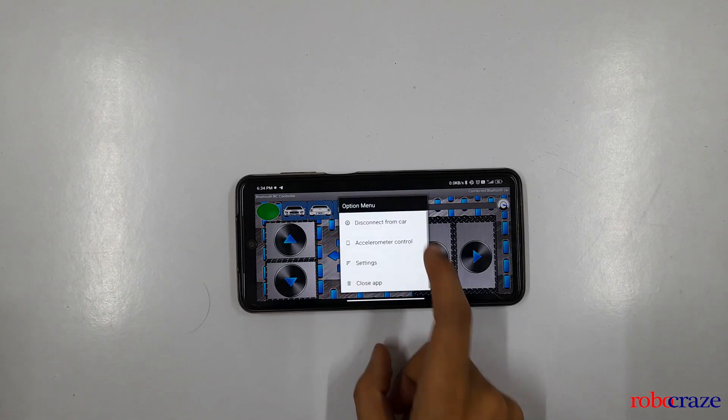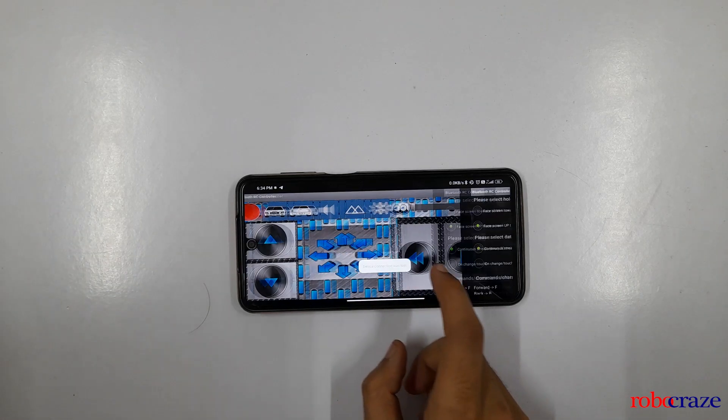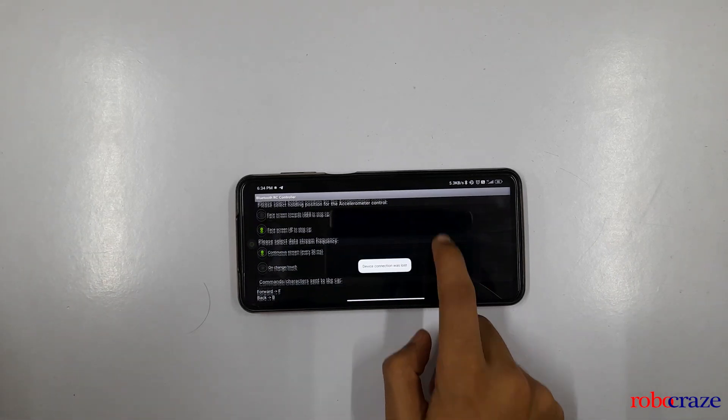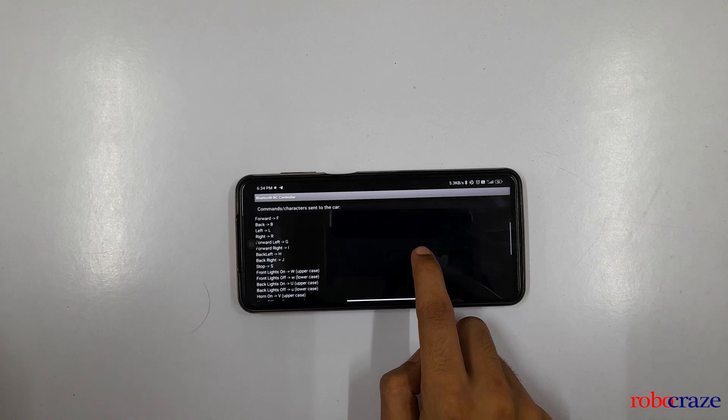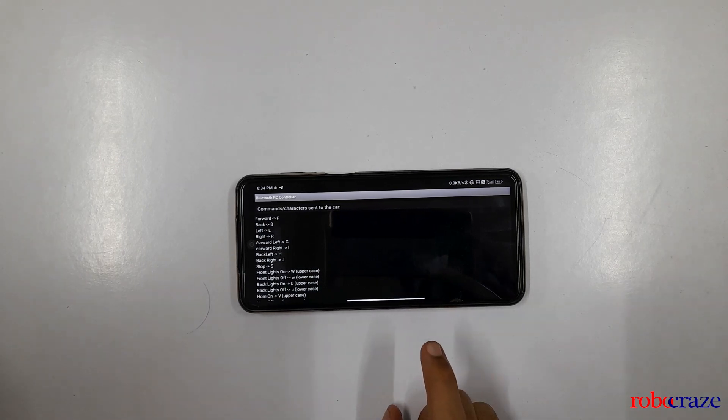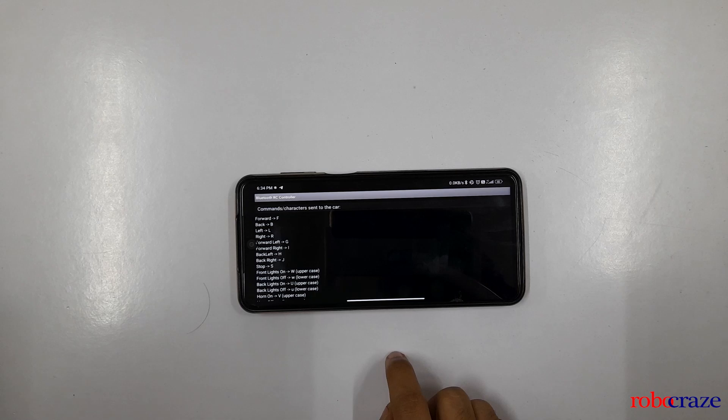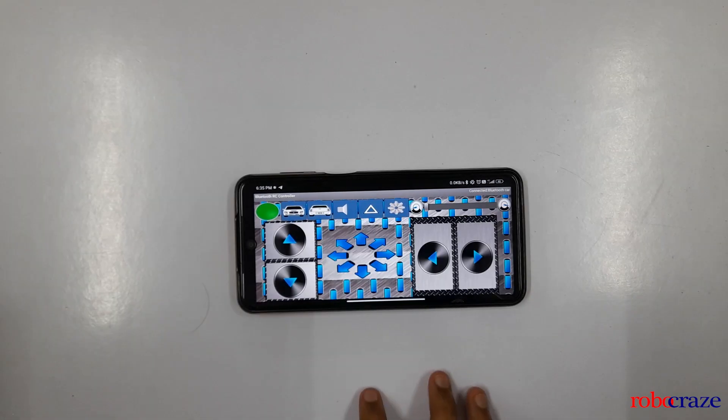If you want to see what are the settings, what are the values which are getting sent when you use the control, go to settings and here scroll down. You will be able to see. So forward is sending F, backward B, left L and right is R. So we have given the same settings in the code.